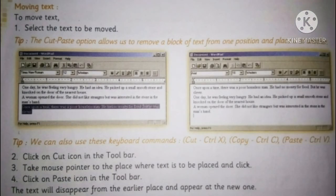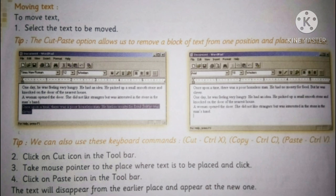Moving text: to move text, first select the text to be moved. The cut and paste option allows us to remove a block of text from one position and place it at another. We can also use keyboard commands: to cut, use Ctrl+X; to copy, use Ctrl+C; to paste, use Ctrl+V. Second, click on the cut icon in the toolbar. Third, take the mouse pointer to the place where the text is to be placed and click. Fourth, click on the paste icon in the toolbar. The text will disappear from the earlier place and appear at the new one.